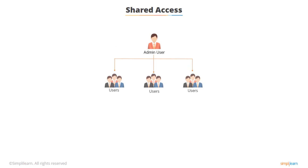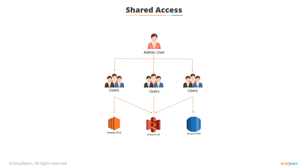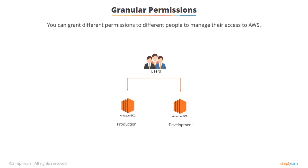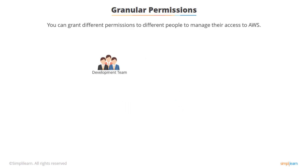For example, you could have a bunch of users that need access to EC2 and S3, and you can permission them to do only that. You could have users accessing just S3, or another group accessing RDS and S3. IAM allows you to set up very granular permissions using IAM users and groups, so you can grant different permissions to different people. For example, users can have access to EC2 production instances but not development instances. You can set up development teams to have write access to volumes without administration access, or allow them to add storage volumes but not launch new instances.